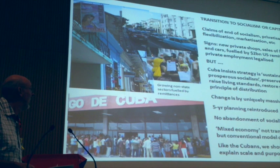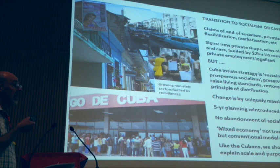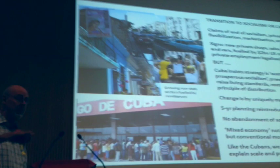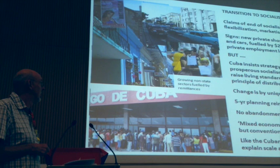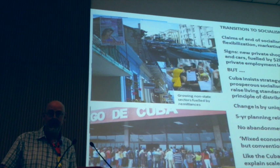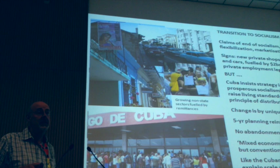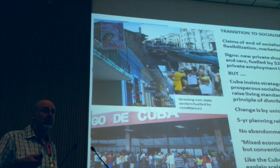This is understood by Cuban economists as a short-term price of the measures which they hope will float the whole economy upwards. Cuba is insisting that this strategy is about building a sustainable and prosperous socialism — not one whose political economy produces that bouncing on the bottom in terms of investment and real incomes. It's a strategy to maintain the very high levels of welfare expenditure, to raise living standards, and to restore what they call the socialist principle of distribution — in a socialist society, people's wealth and income should be related to the contribution they make during their working lives.